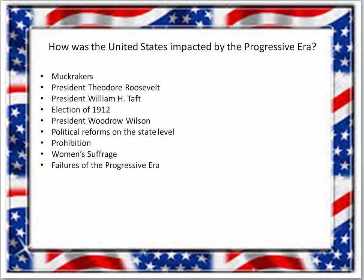Now the Progressive Era — how was the US impacted? Remember the muckrakers: those who wrote about problems in society. Upton Sinclair wrote The Jungle, exposing meatpacking conditions. Jacob Riis wrote How the Other Half Lives, about tenement conditions. The first progressive president was Teddy Roosevelt, a Republican. His plan was called the Square Deal — he wanted all people to have equal opportunity. He broke up the anthracite coal miners' strike by threatening to take over the mines, helped pass the Pure Food and Drug Act and Meat Inspection Act, and was known as the trust buster, distinguishing between good and bad trusts. He was also a conservationist, setting aside land for national parks.